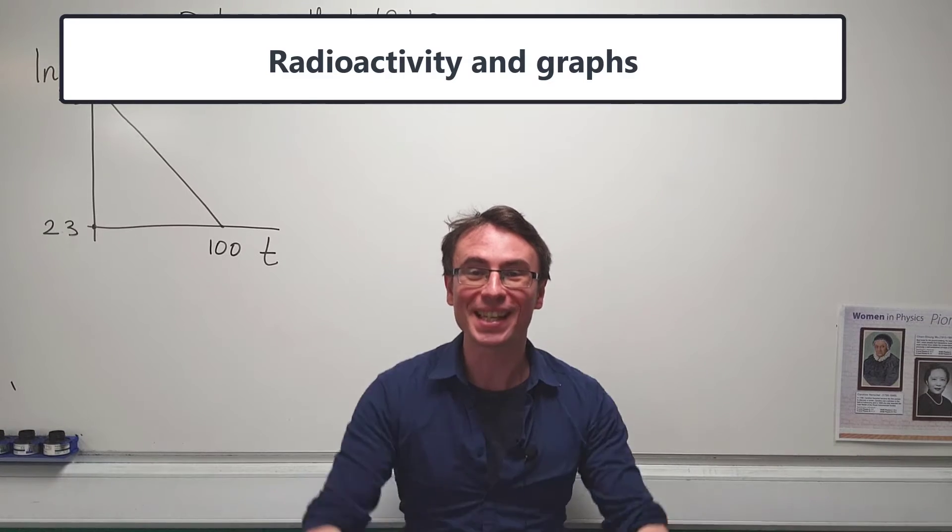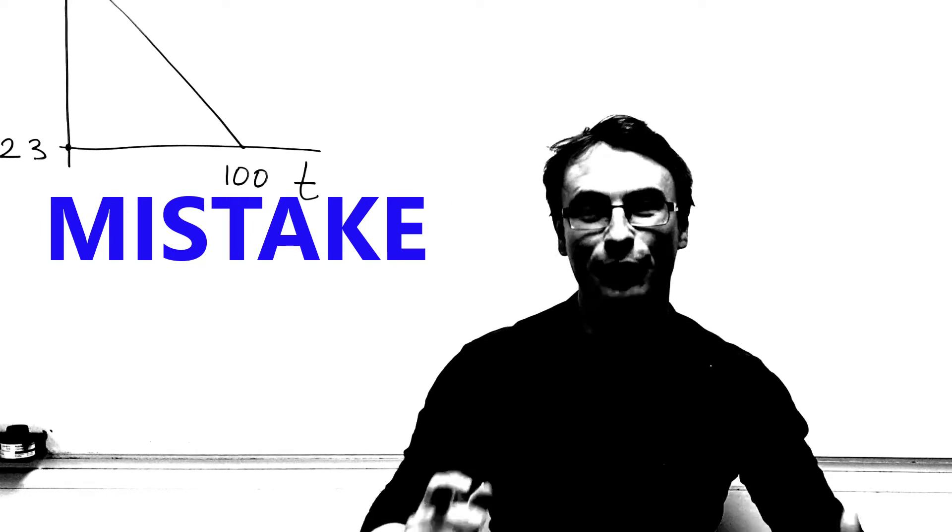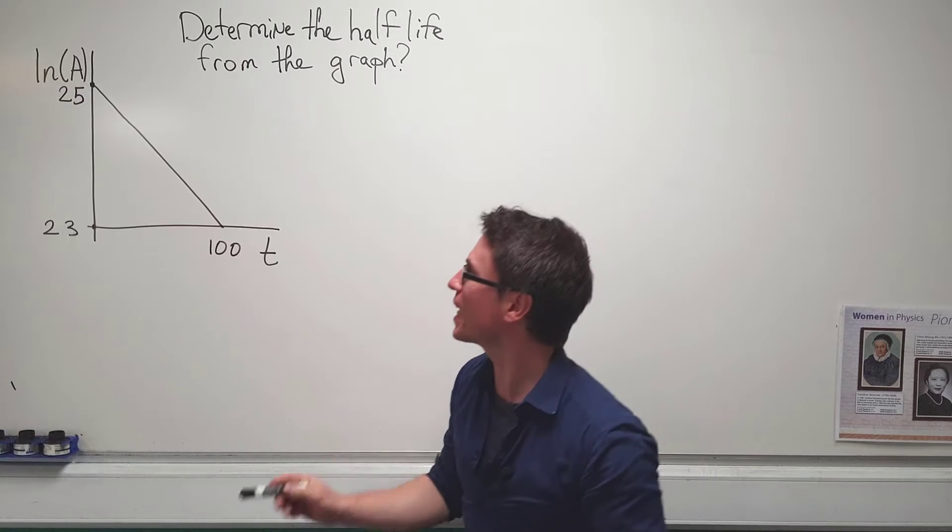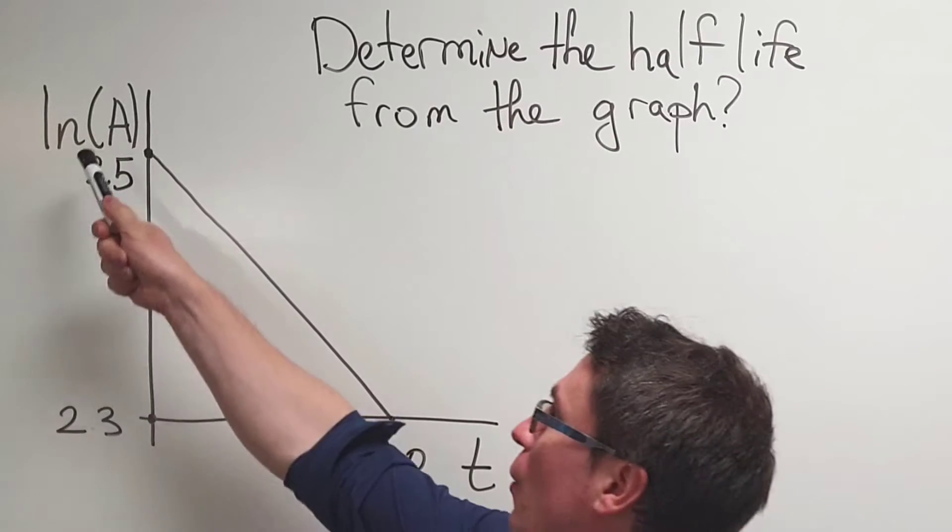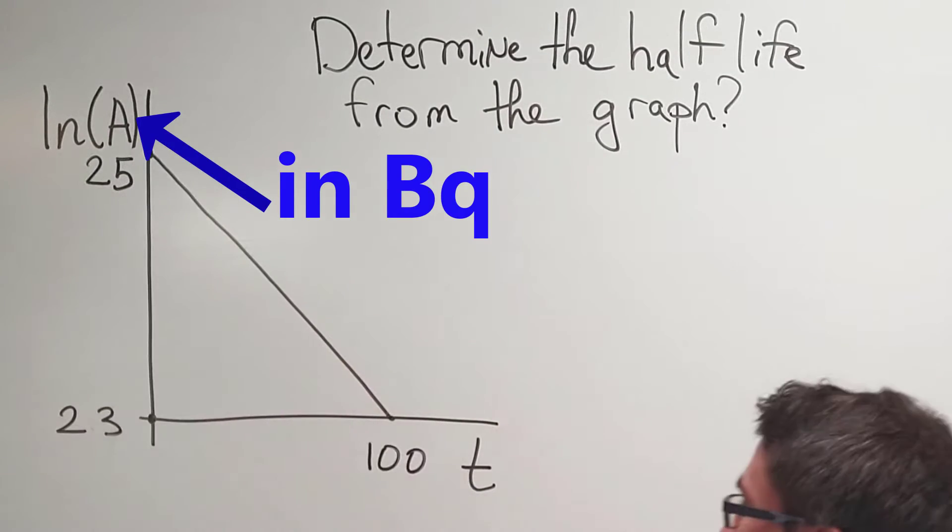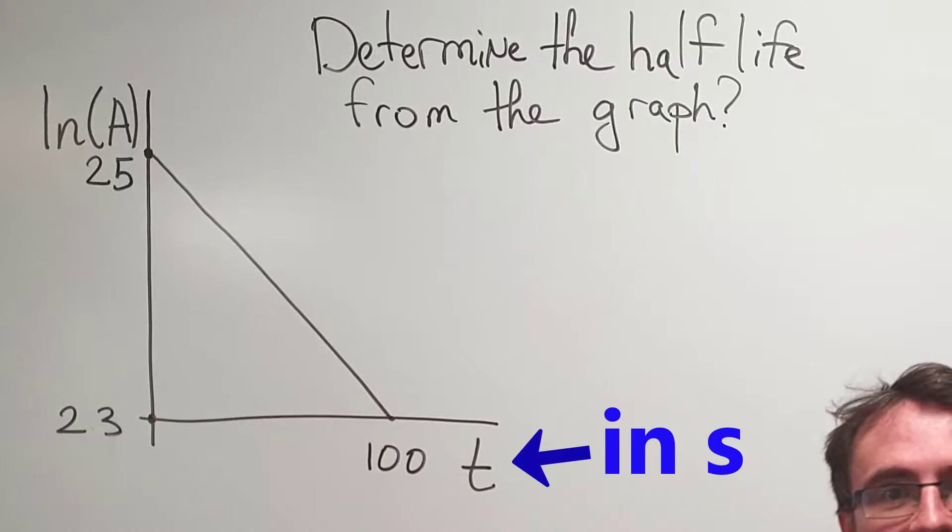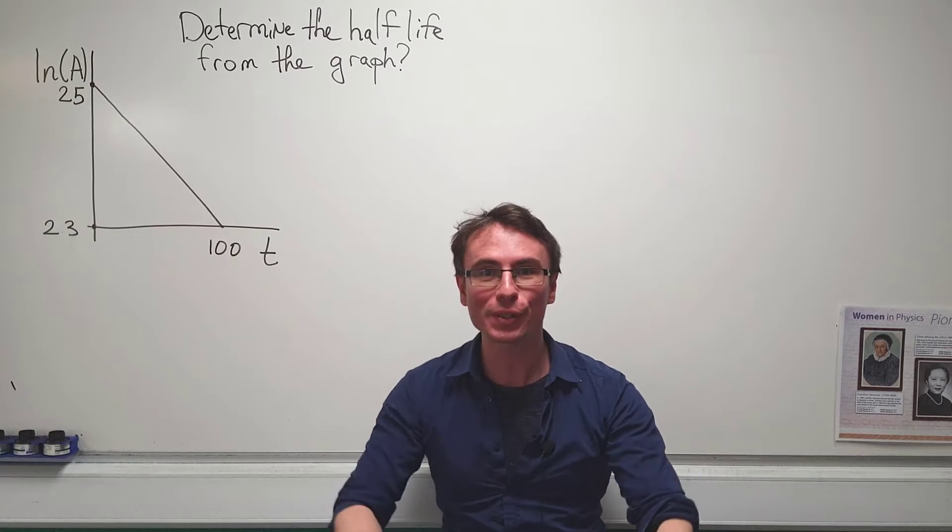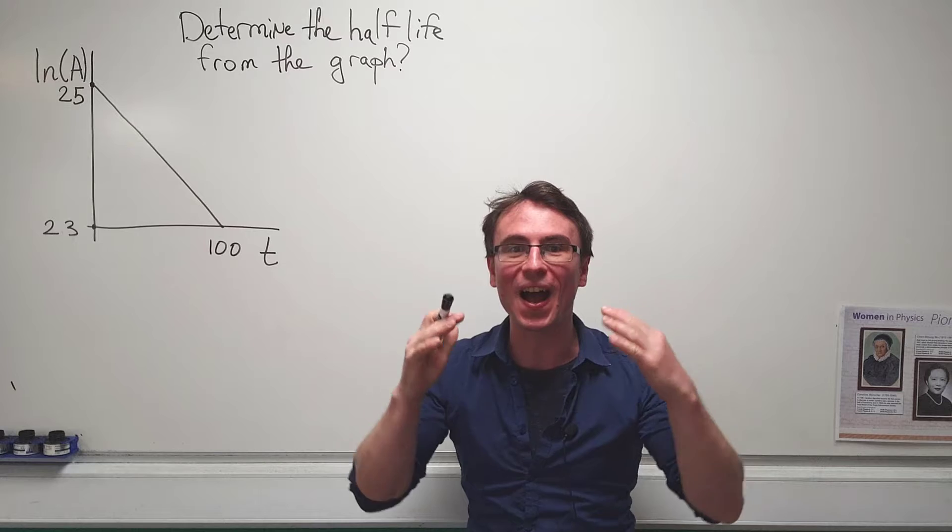Dealing with radioactivity in graphs is a very common mistake in physics. Have a look at this. I've made up some data. We have a graph of the natural log of the activity against time. How could we use this graph to determine the half-life?